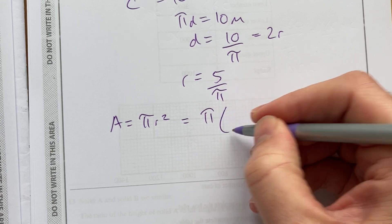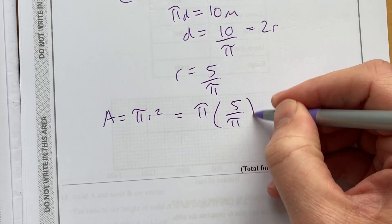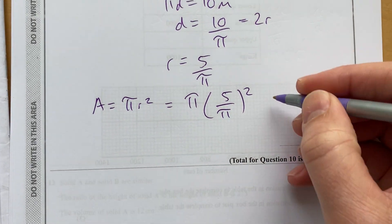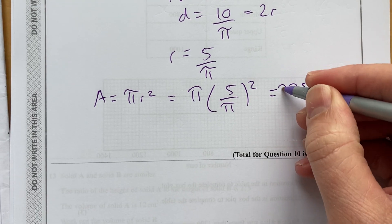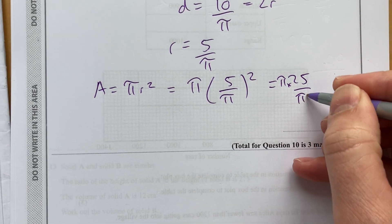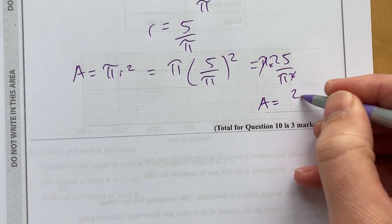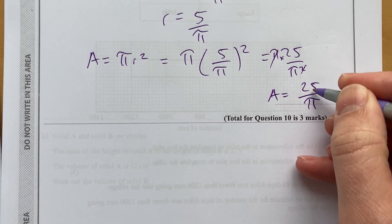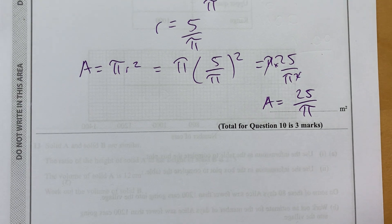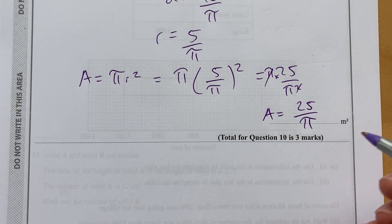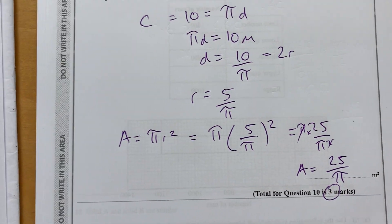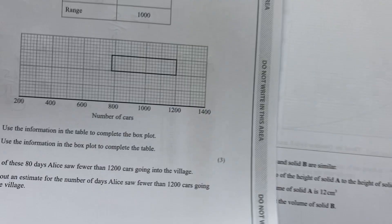They then say, work out the area of the circle. We know that area is pi r squared. So, in this case, it is pi, 5 over pi squared. So, that's pi times 25 over pi squared. One of those will cancel. Area is 25 over pi meters squared. And they said, leave it in terms of pi. That's three marks there.